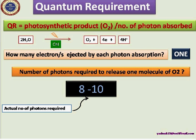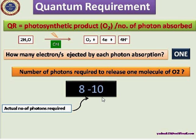The next topic is quantum requirement. Quantum requirement in photosynthetic product considers the evolution of oxygen per number of photons absorbed. When two molecules of water are photolyzed by light, one molecule of oxygen is released along with four electrons and four protons. One electron is ejected per photon absorbed, so theoretically four photons should be needed to release one O2 molecule. However, the actual number of photons required is eight to ten, indicating indirectly that two photosystems are working mutually, or each electron is being excited twice.